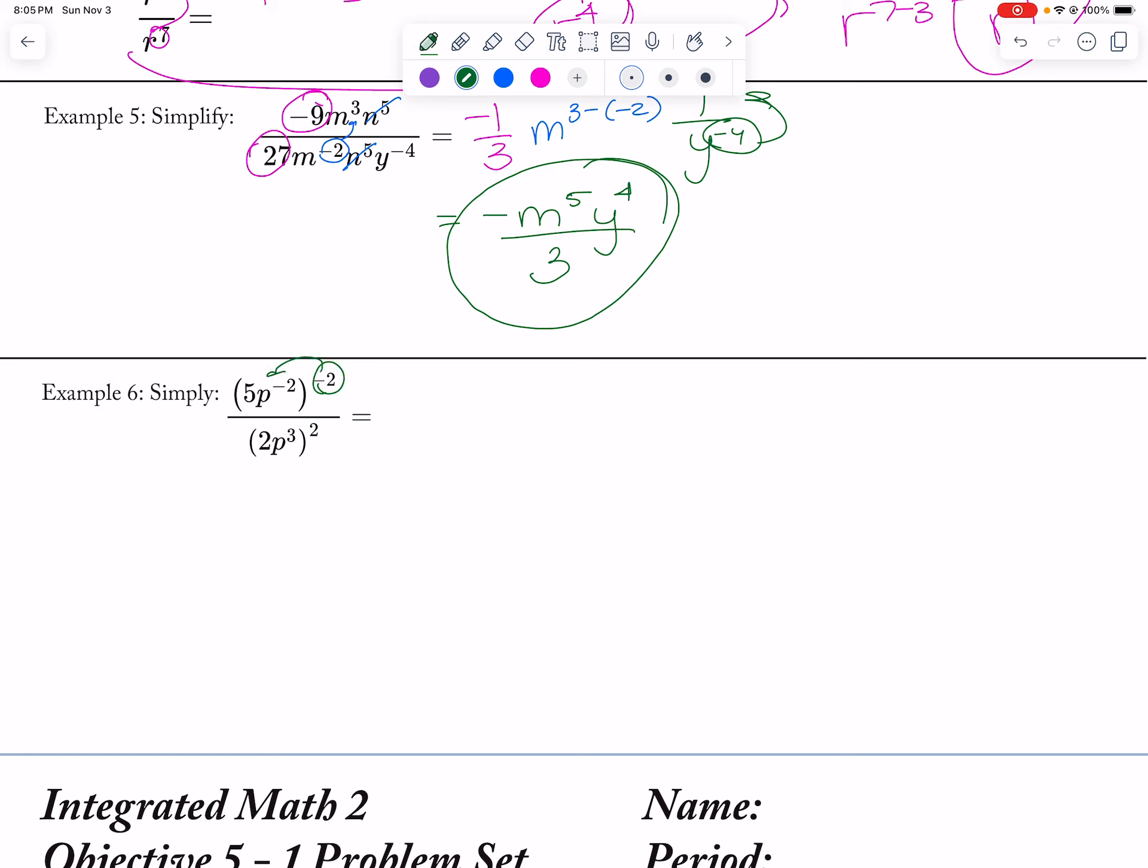Here, my negative 2nd power I would distribute, so this is 5 to the negative 2nd power, p to the 4th power, because I multiply my exponents together. 2 squared, p to the 6th. Then I would have 1 over 5 squared, 2 squared, p to the 6th minus 4, which gives me 1 over 100p squared.